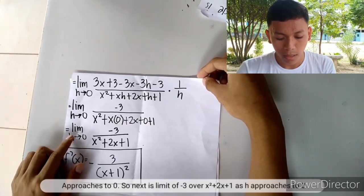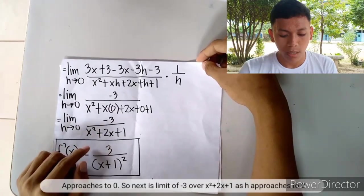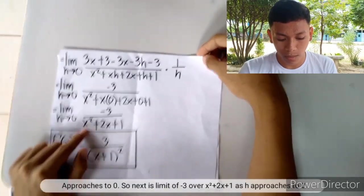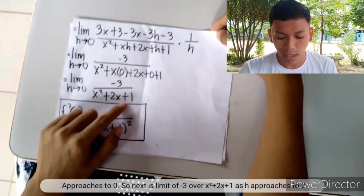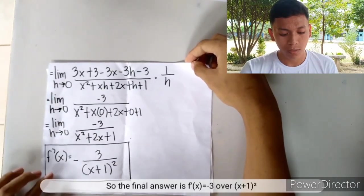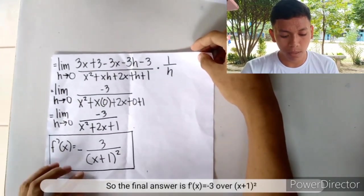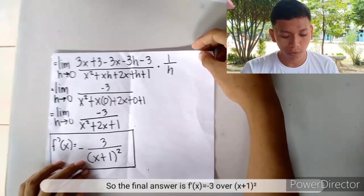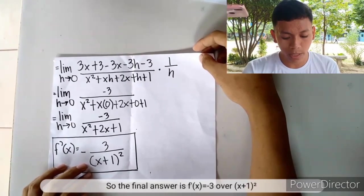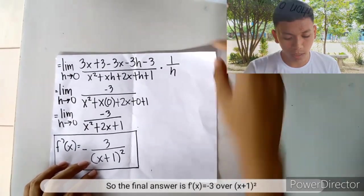We get the limit of negative 3 over x squared plus 2x plus 1 as h approaches 0. So the final answer is f prime(x) equals negative 3 over (x+1) squared.